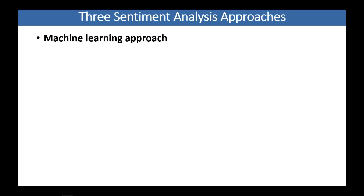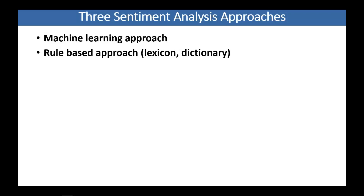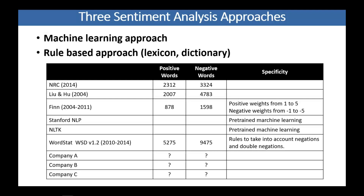There are three sentiment analysis approaches. The first is a machine learning approach where you train the software to recognize sentiment on training sets coded as positive or negative. The second — probably the most common — is a rule-based approach where you apply a lexicon or dictionary to identify positive and negative sentiment words in a text. The third is a mix of both.